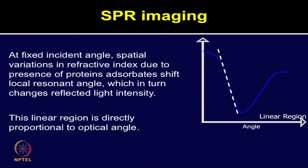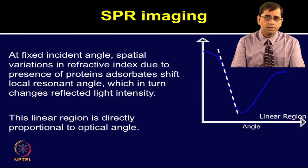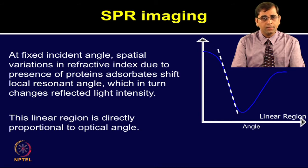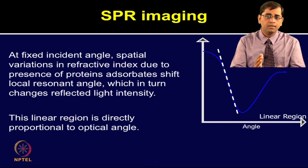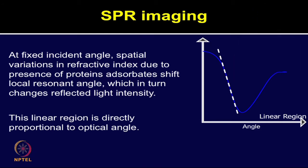At a fixed incident angle, the spatial variations in refractive index due to the presence of protein or other molecule adsorbates shifts the local resonant angle, which in turn changes the reflected light intensity. This linear region, as shown in the graph, is directly proportional to the optical angle. This linear region of the SPRi curve quantitatively correlates the changes in reflected light intensity with the amount of material present on the surface.